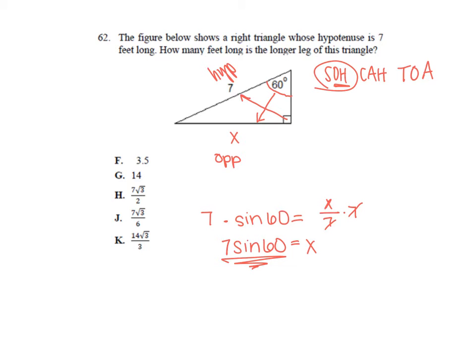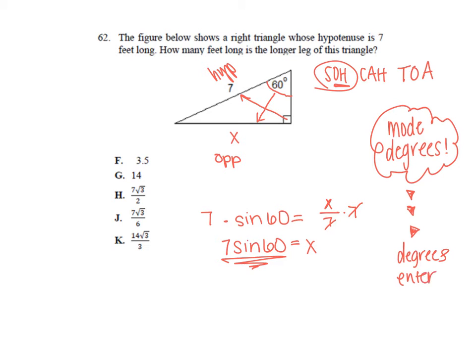The most important thing to remember is the mode has to be set to degrees. So you want to double check that. How you do that is you press the mode button on your calculator. You go down two times, go right once, it will say the word degrees. You want to press enter so that it's highlighted. After you press enter, you can just press clear and it will exit you out so you can type 7 sine 60.